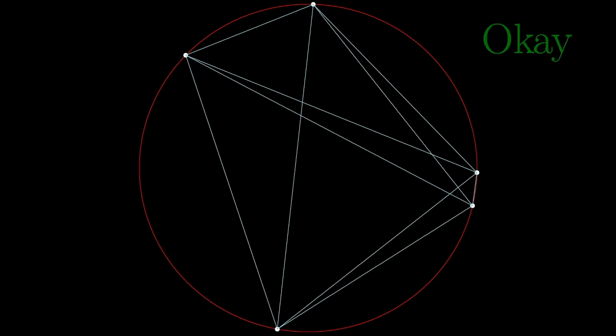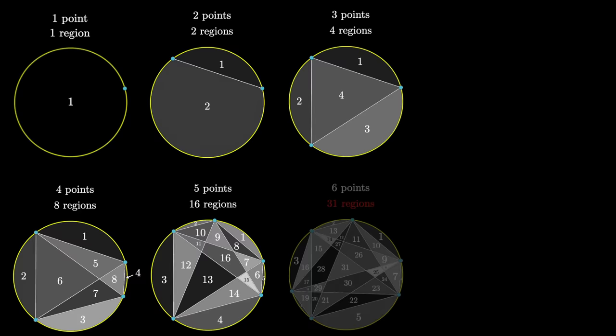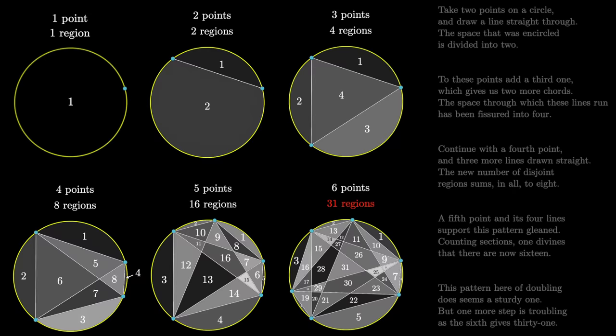This would be the generic case if you just choose n random points, almost certainly you'll never have three lines coincide. But setting aside the technical nuances, the problem is such a tease! It looks so convincingly like powers of two until it just barely breaks. And I have such a strange soft spot for this particular question. When I was younger I wrote a poem about it, and also a song.